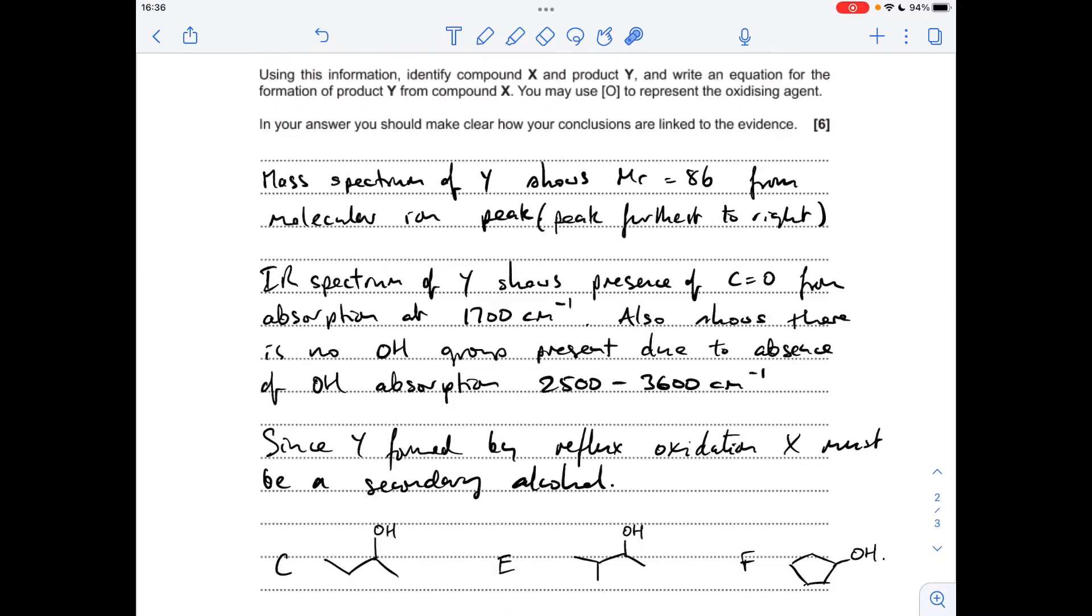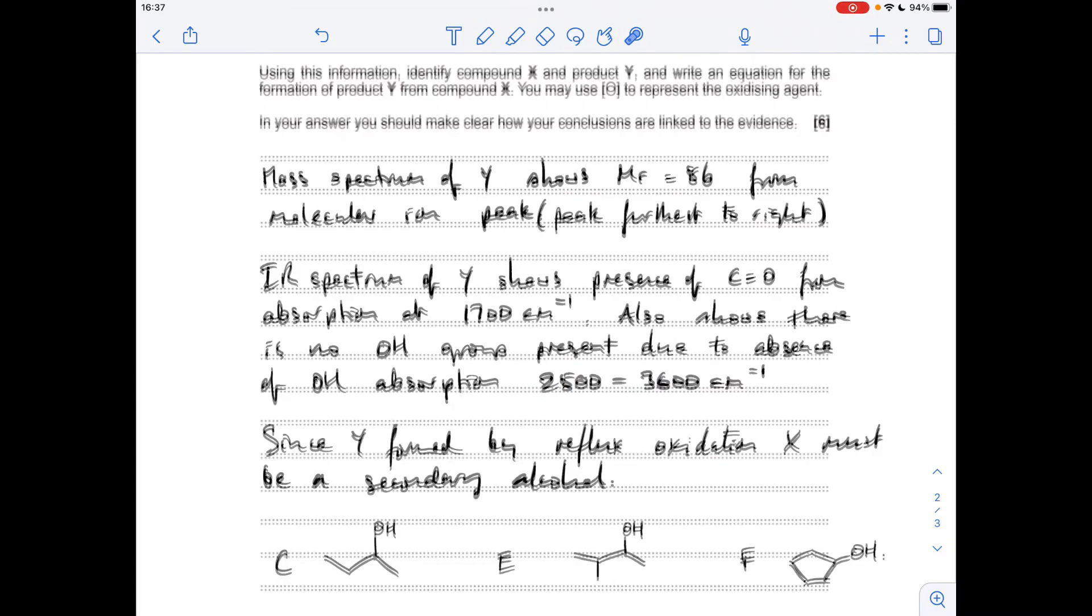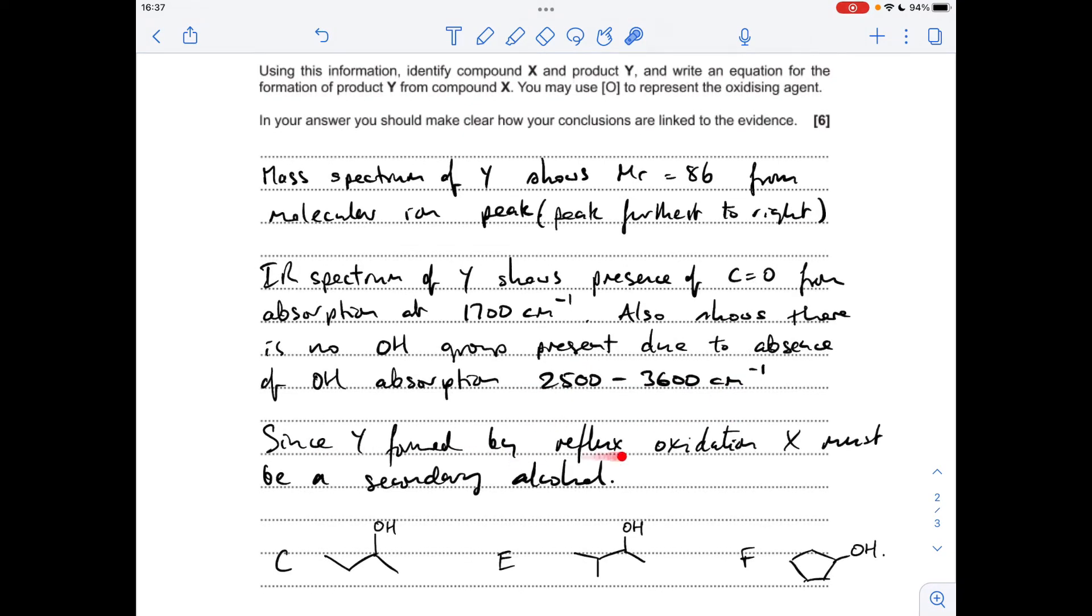And it also shows there's no OH group present due to the absence of an OH absorption between 2500 and 3600 centimeters to minus 1. That's where your OH absorptions would occur. So since Y was formed by reflux oxidation, X must therefore be a secondary alcohol. So there's my list of secondary alcohols.